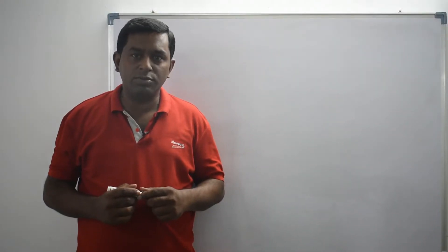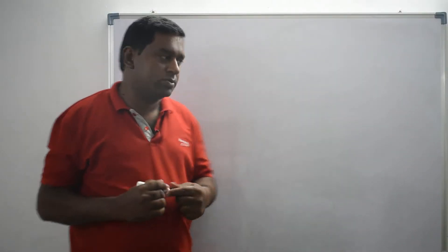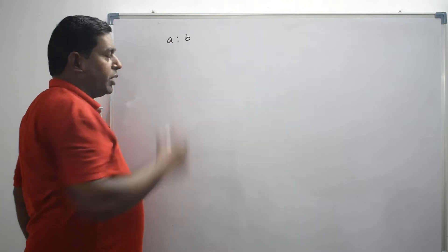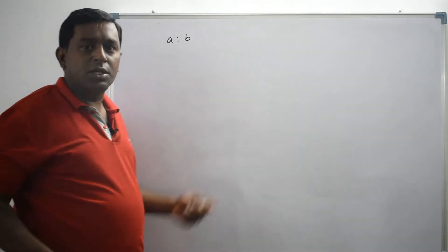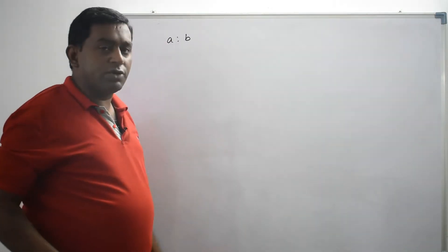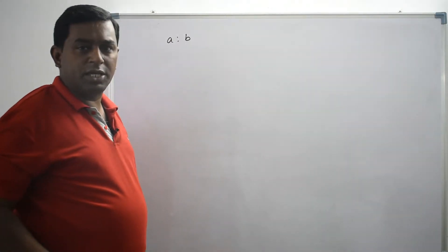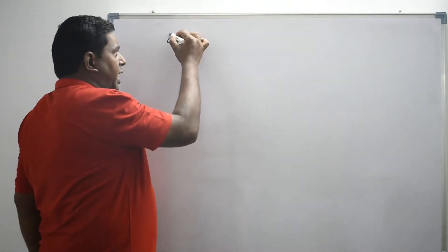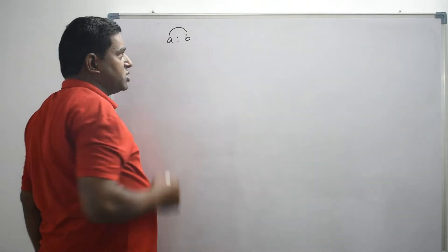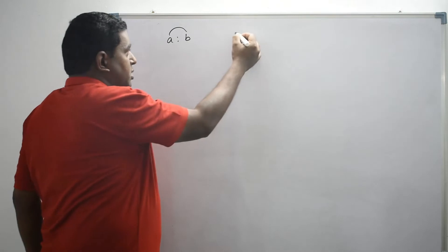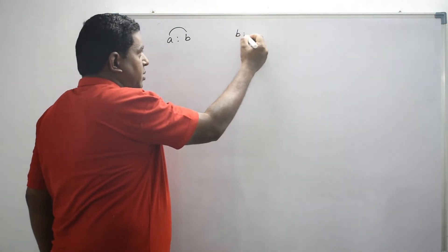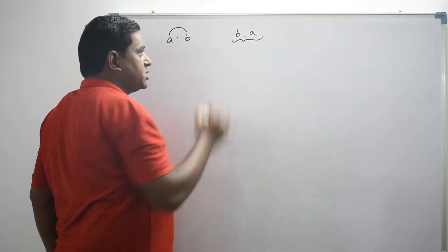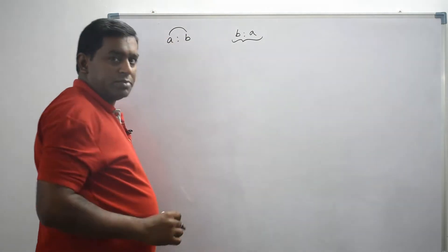What is inverse ratio? Let's consider the ratio A is to B. To find the inverse of this ratio, I have to interchange the first term and second term. Then I get B is to A. So B is to A is the inverse ratio of A is to B.